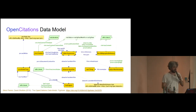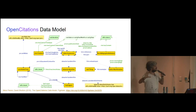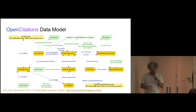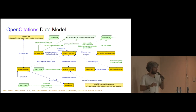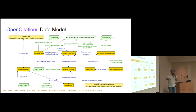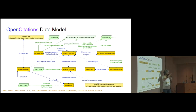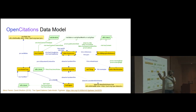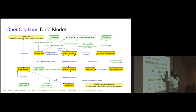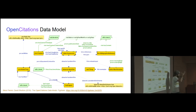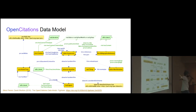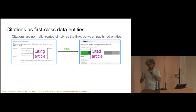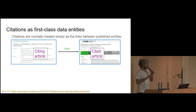This picture shows the data model that we use for describing citations. I don't want to focus too much on the technical details here. I just want to show you the two main classes that are expressions based on the FRBR specification that we use to record all the bibliographic entities — papers, for instance — and citations as a proper entity defined within the model. Because we wanted, in our idea, to define citations as first-class data entities.